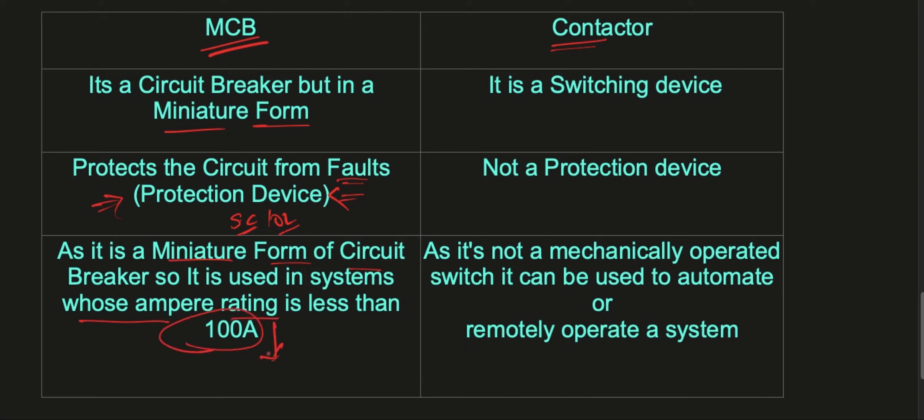A contactor is a switching device. Contactor does not provide any protection to the circuit, so it is not a protection device. Contactor is not a mechanically operated switch, so it can be used to automate or remotely operate any system.